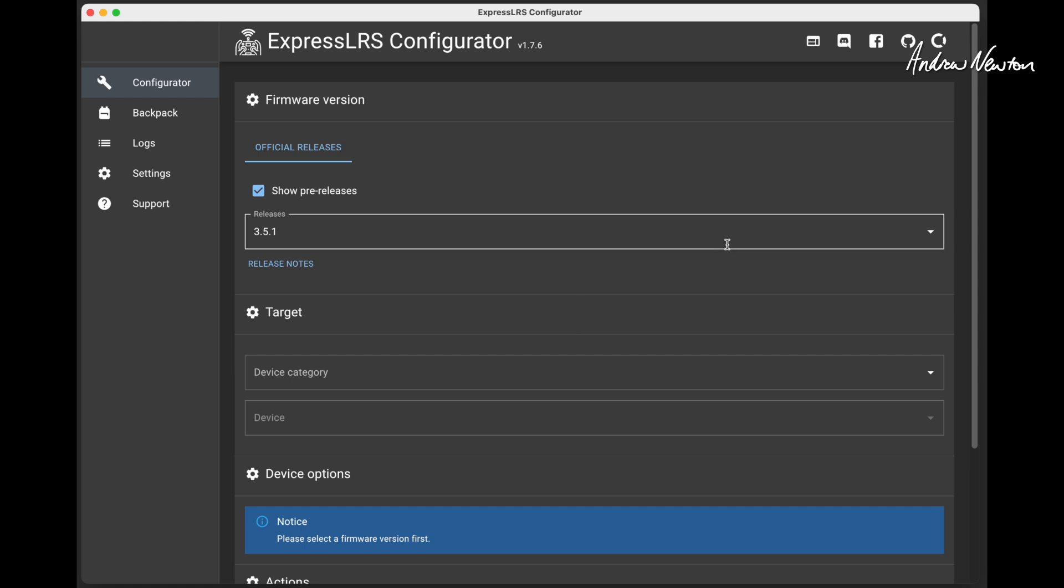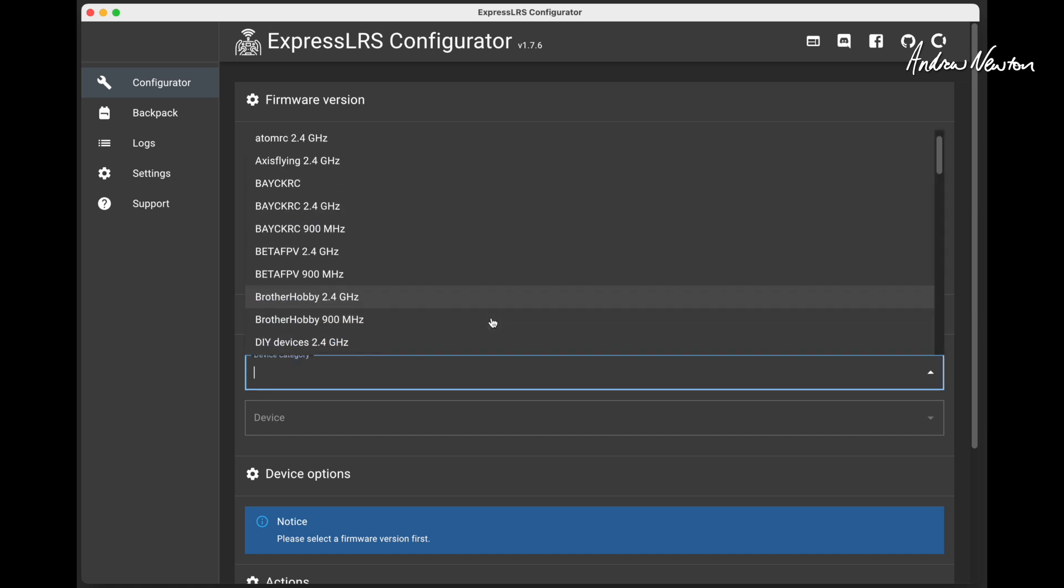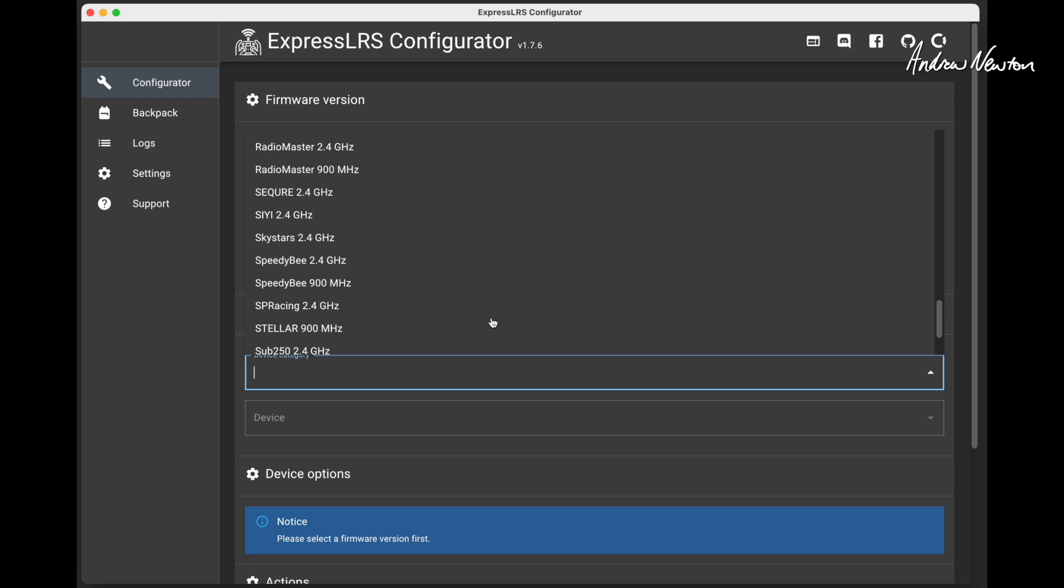Now something you should do when you're considering buying an ExpressLRS receiver is go over to the ExpressLRS configurator and make sure it is supported by the ExpressLRS project. If the firmware target is included in here, you know that the company has been cooperating with the ExpressLRS project and providing samples for them to check out. If you can't find the firmware target in the list here, you know that the company isn't really playing ball.